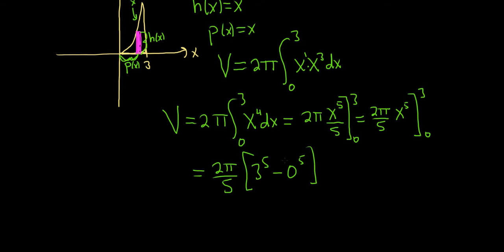So 3 to the 5th is 243. So times 2, it's going to be 486. So this will be 486 pi over 5. And that would be the volume of the solid of revolution. That's it.